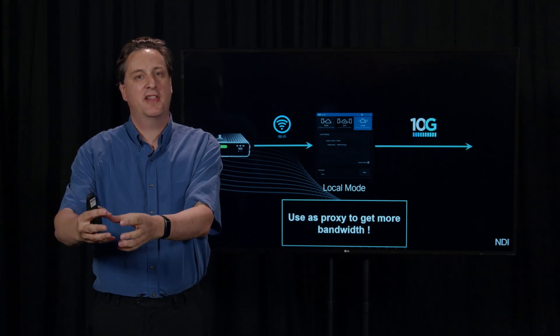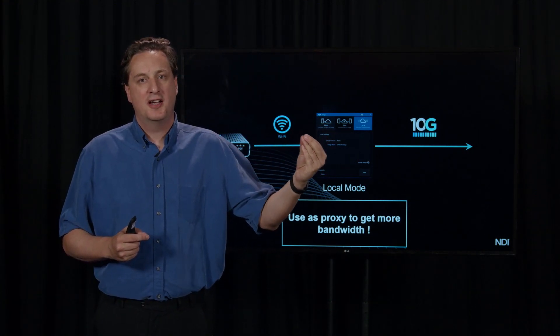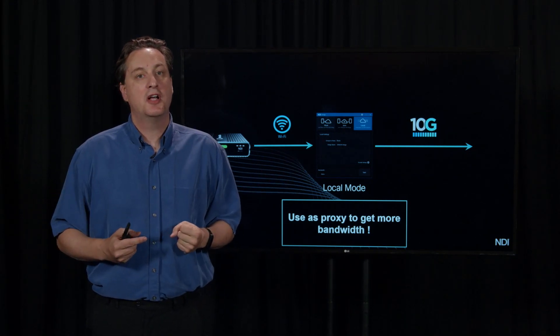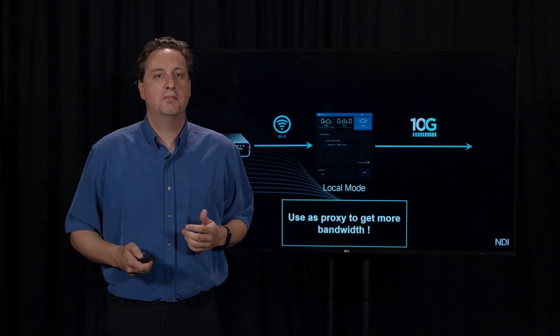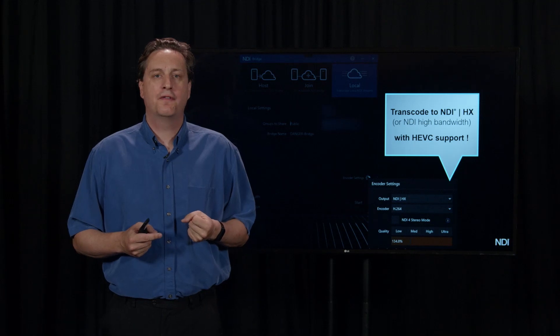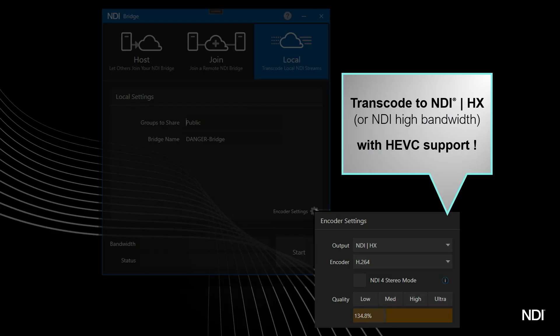If you're running it on a high-performance machine with 10 gigabit Ethernet, your whole company can connect to that machine with only a single connection back to your iPhone camera. With 10 cameras, you start to see big benefits in terms of bandwidth. You can have cameras that are remote with limited bandwidth, and use this as a proxy to make that source available to everybody else. NDI Bridge Local Mode can also fully transcode all of those sources into NDI HX — not just H.264, but it fully supports HEVC as well.